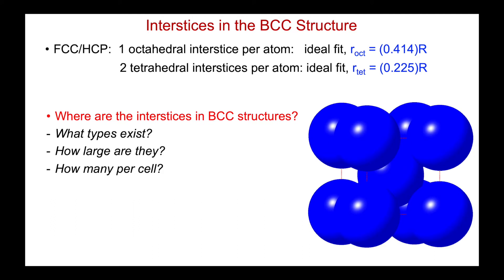Well, here's the BCC structure. We know atom contact is along the body diagonal. And we can see along the edges here where the atoms are not touching, we can see those voids. And so this is one set of voids halfway along the cell edge that look as though potentially they could incorporate some interstitial atoms.